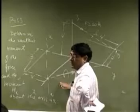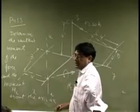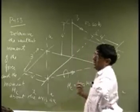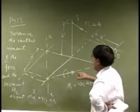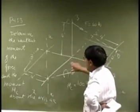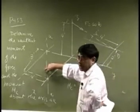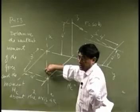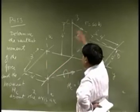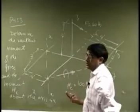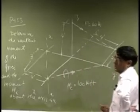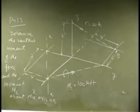Your actual resultant moment will be the component of this moment, that's one, then the moment of this about this. You add those two and that will give you the resultant moment.